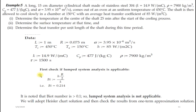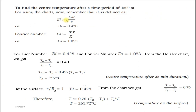Important note: to check if lumped system analysis is applicable, use lc = r/2 for a cylinder. Once lumped system analysis is confirmed inapplicable, find Biot number for the graph using lc = R (full radius). So Bi = hR/K = 0.428, Fo = 1.053. Going to the first graph (center line temperature for cylinder), we expect to find the y-axis value.